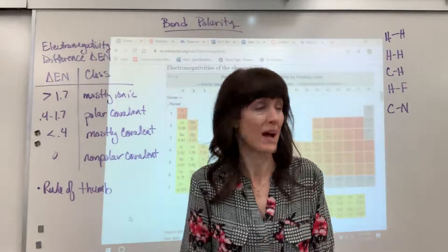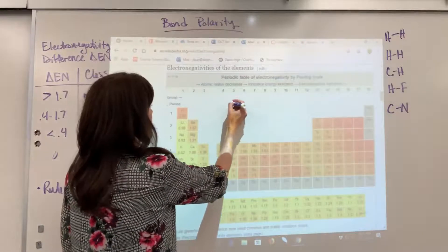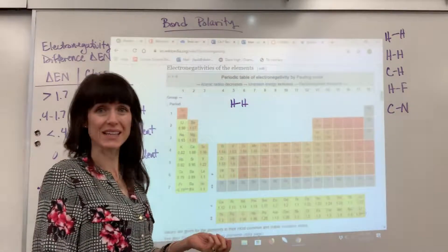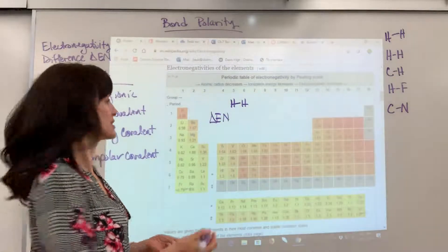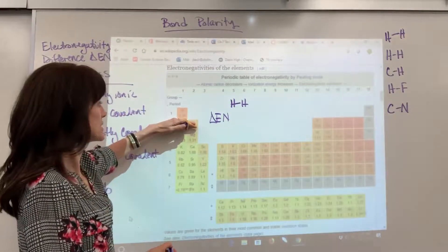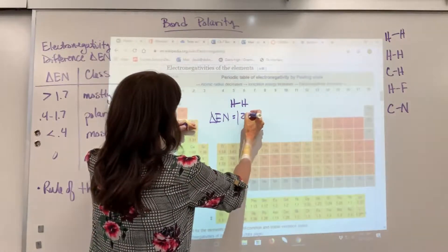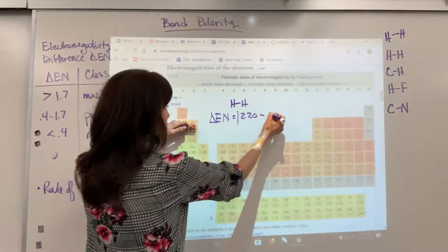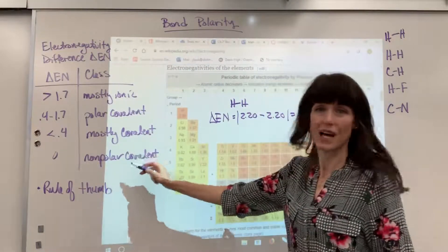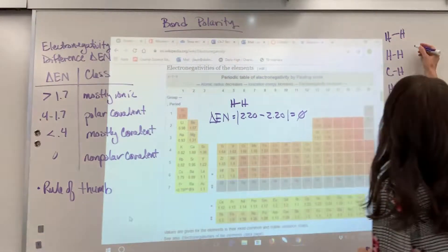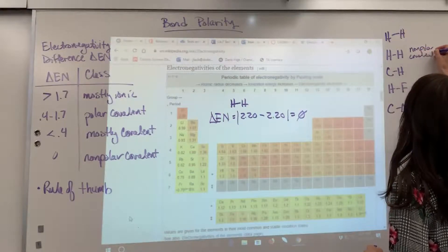Let's do four examples. For hydrogen and hydrogen, we calculate the electronegativity difference: delta EN = 2.20 minus 2.20 = zero. So this is a nonpolar covalent bond. Those two electrons shared between hydrogen and hydrogen spend equal amounts of time next to each atom — no charge, no partial charges.